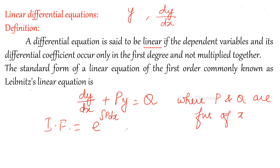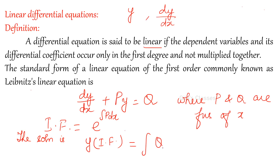Now we are not going to multiply the equation by the integrating factor directly — there is a special method. The solution is given by y times integrating factor equals integral of Q times integrating factor dx plus constant. Here the dependent variable is y and the independent variable is x.